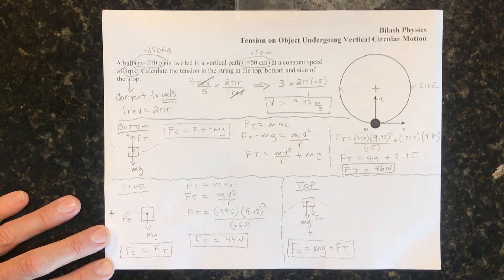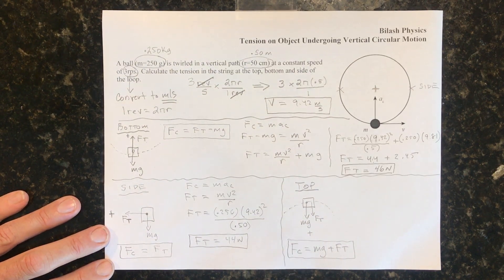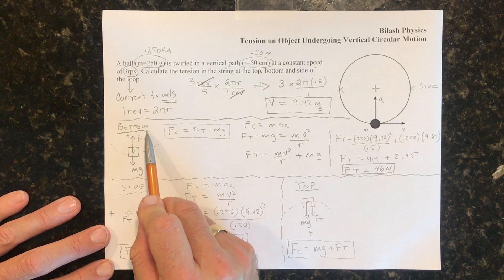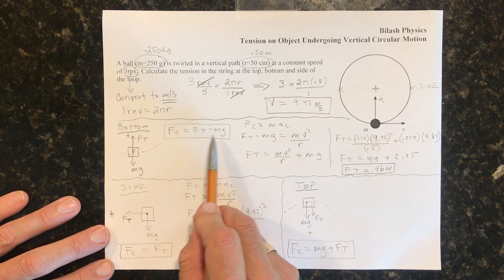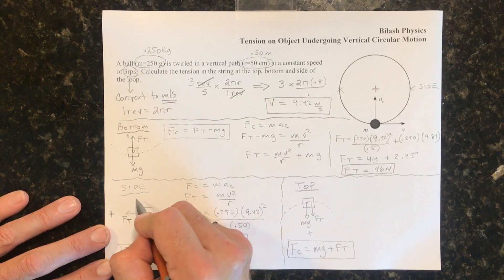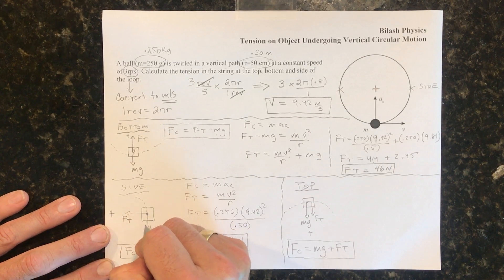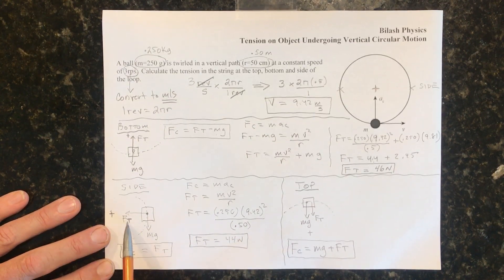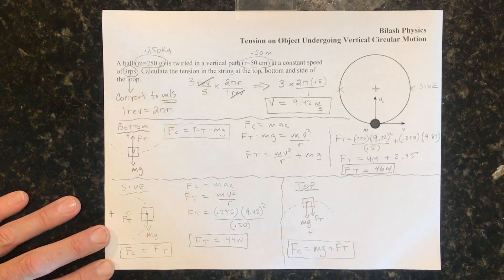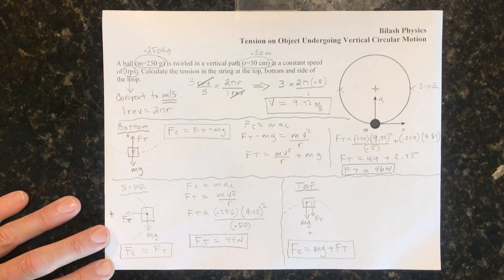Like that. Notice when we are at the bottom of the circle, it's Ft minus mg. When we are at the side of the circle, it's only Ft that comes into play. And at the top, it's mg plus Ft.